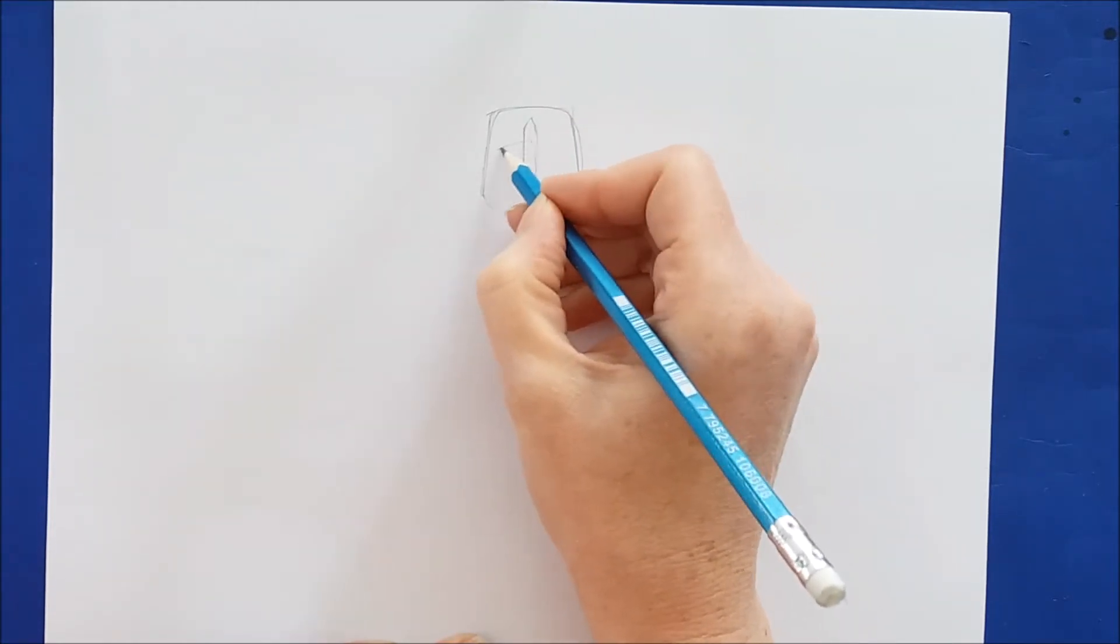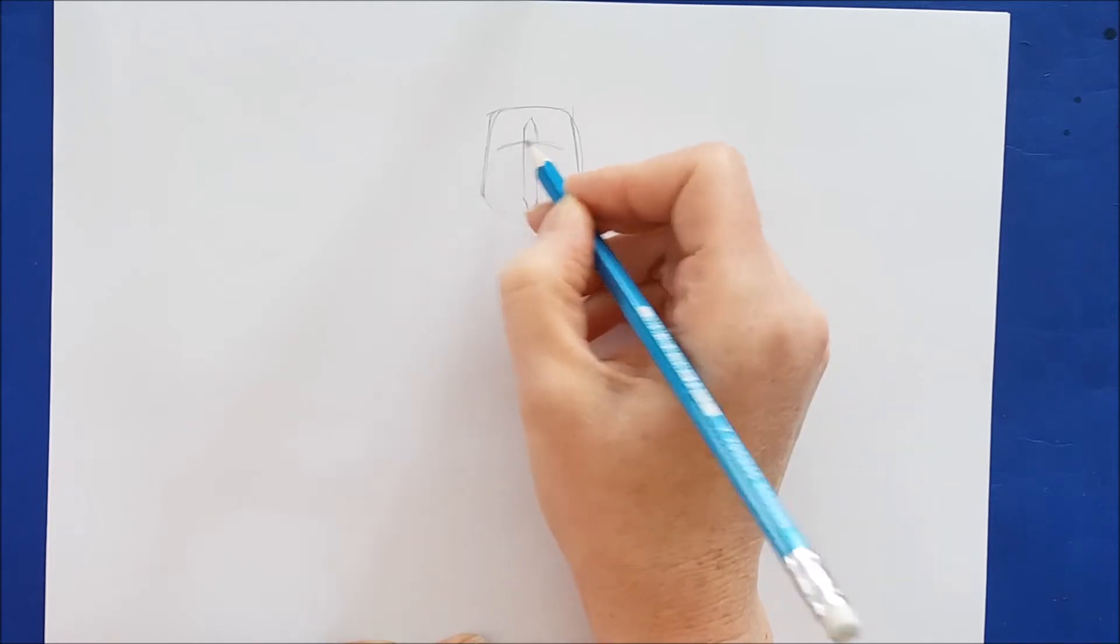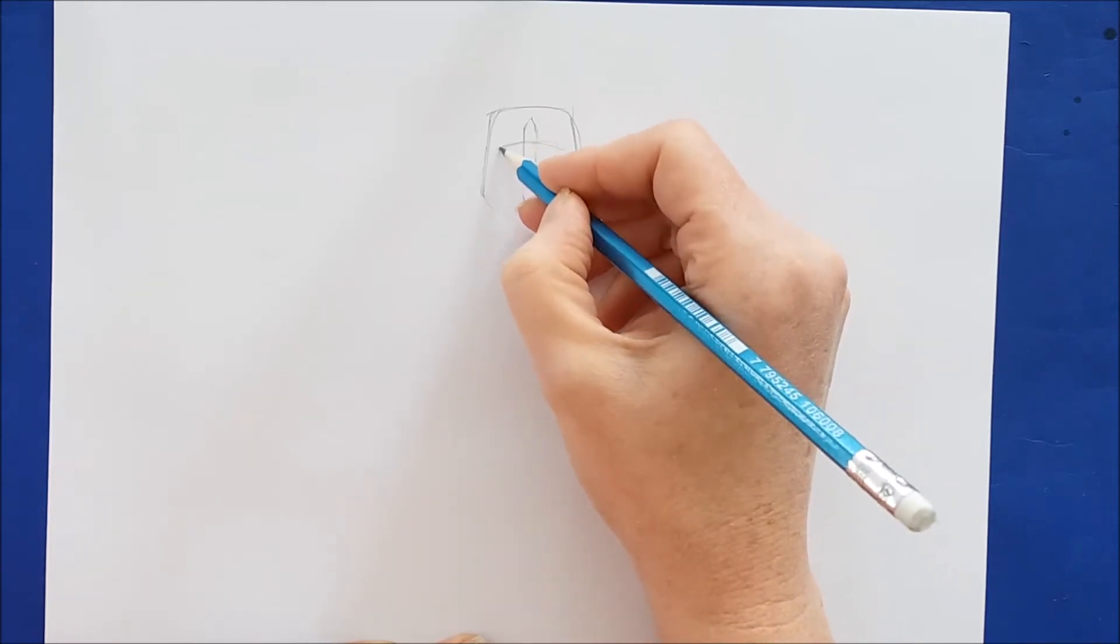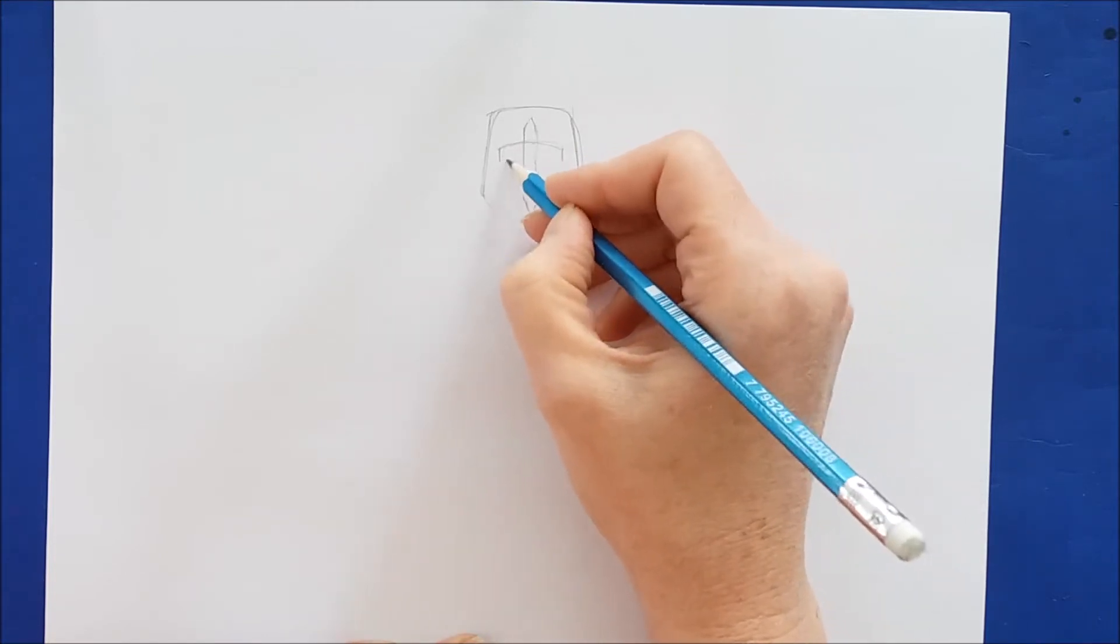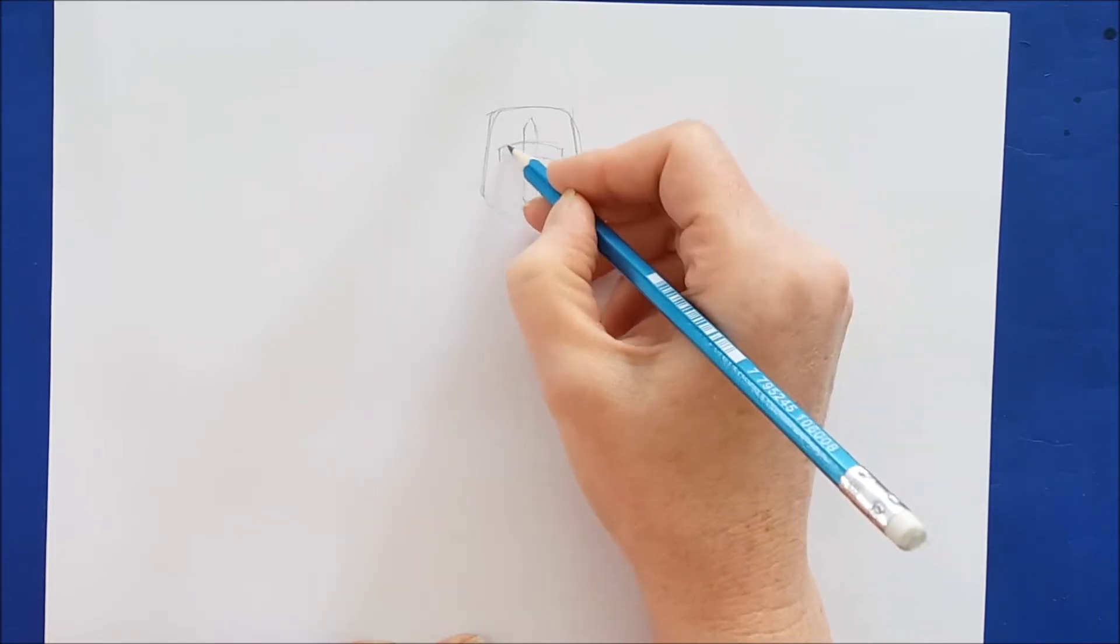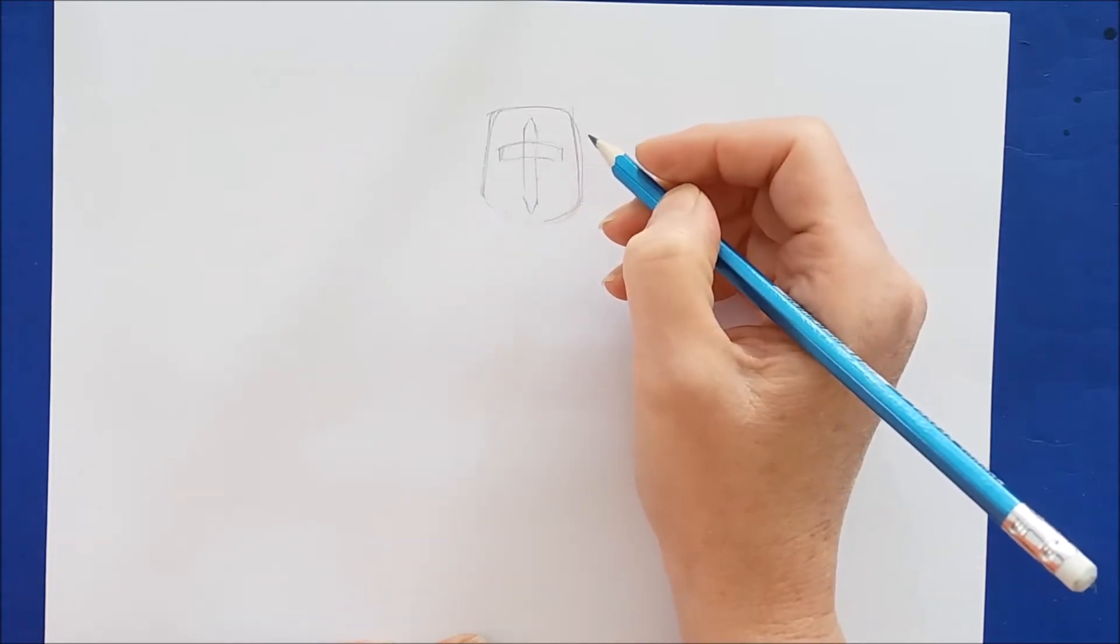This would be the opening in the helmet that the knights would look out from. Some knights had crosses in their helmets, other knights had the shape of a letter T. You can draw the opening in your helmet however you like.